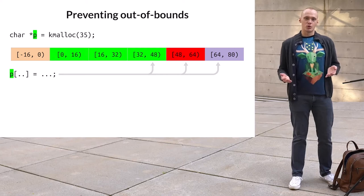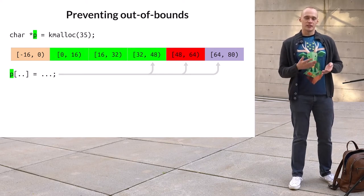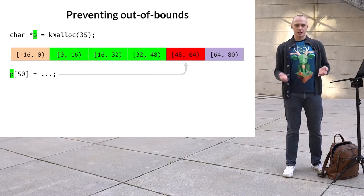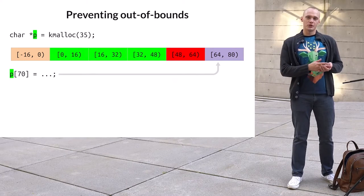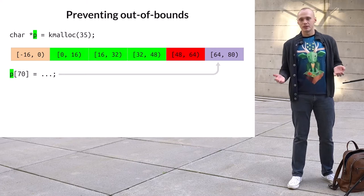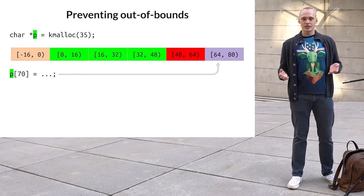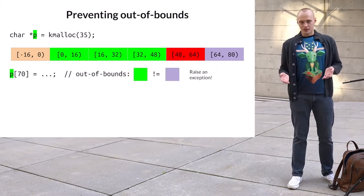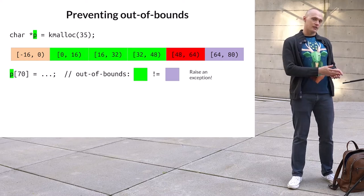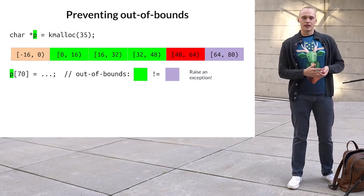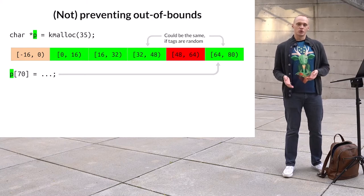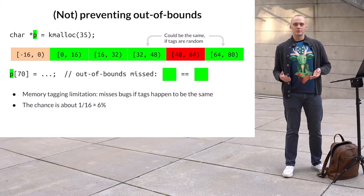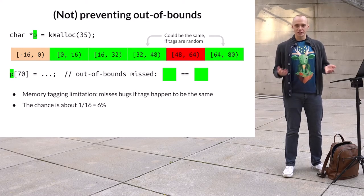But what will happen if the kernel accesses the object out of bounds? It depends on where exactly the access lands. If the kernel accesses offset 50, the access lands in the leftover granule marked with the invalid tag — so there will be a tag mismatch and MTE will catch the bug. However, for an out-of-bounds access with a large offset, the most likely result is that the access lands in a memory granule with a different tag. MTE has 16 different tags, so the probability of two random tags being the same is about 6%. Nevertheless, the access might land on a granule with the same tag, in which case MTE will miss the memory corruption. So the ability of MTE to detect such accesses is probabilistic.